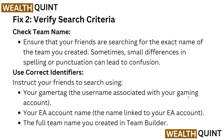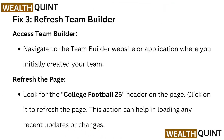The second fix is to verify your search criteria. Check the team name and ensure your friends are searching for the exact name of the team you created — sometimes small differences in spelling or punctuation can cause confusion. Use correct identifiers: instruct your friends to search using your gamertag username associated with your gaming account, your EA account name, and the full name of the team you created in team builder.